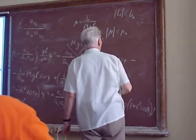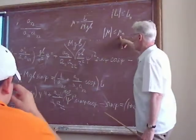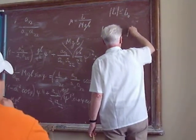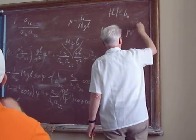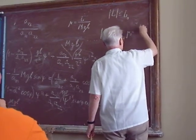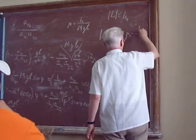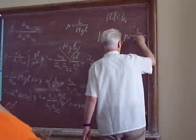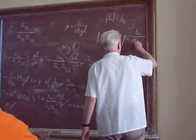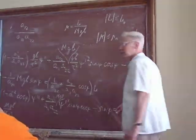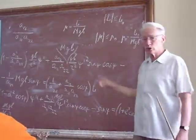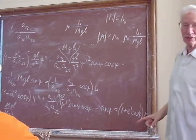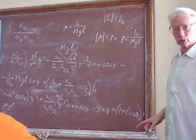This constant mu zero is defined as L zero divided by Mgb. It is also a dimensionless variable, mu zero.